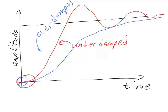As you decrease damping, the system will keep getting faster but you will introduce more oscillations. So when we draw in the critically damped case, we have a response that is as fast as possible without having any oscillations. The critically damped case will be faster than the overdamped but slower than the underdamped case.